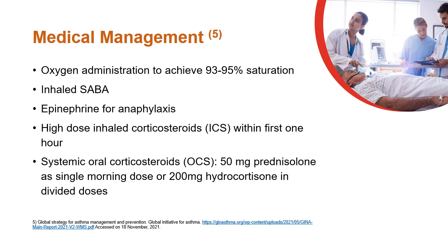Systemic corticosteroids must be administered within one hour of presentation, and this is particularly important if initial short-acting beta-2 agonist therapy fails. Daily doses of oral corticosteroids equivalent to 50 mg prednisolone as a single morning dose, or 200 mg hydrocortisone in divided doses, are typically administered in adults.